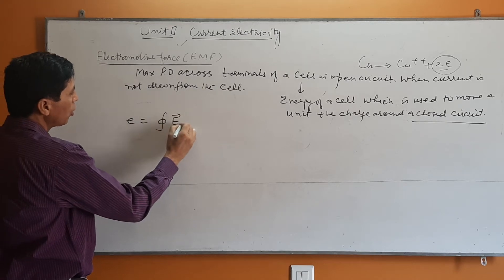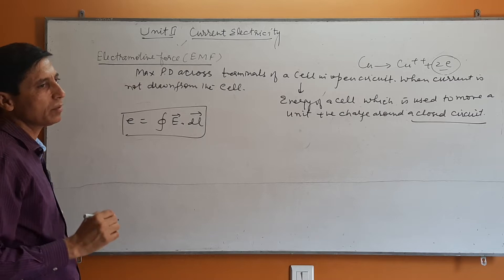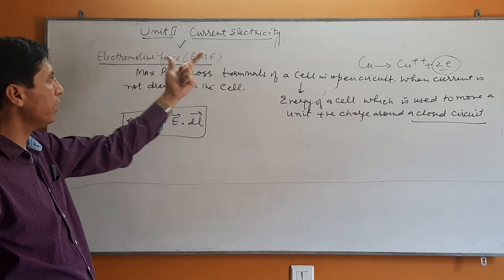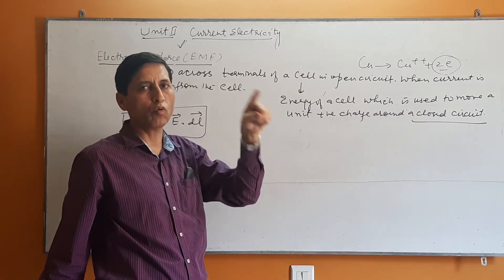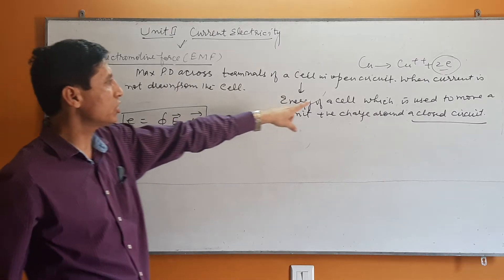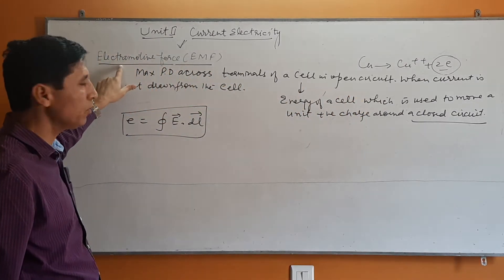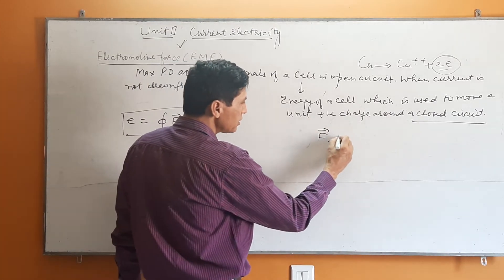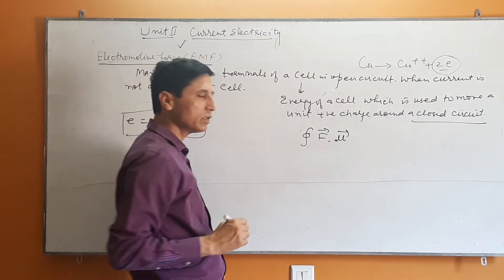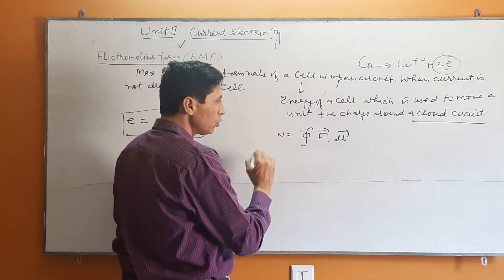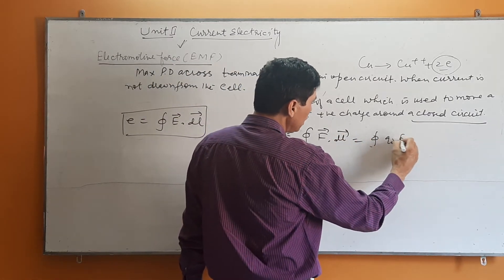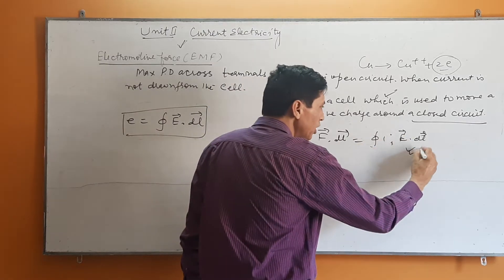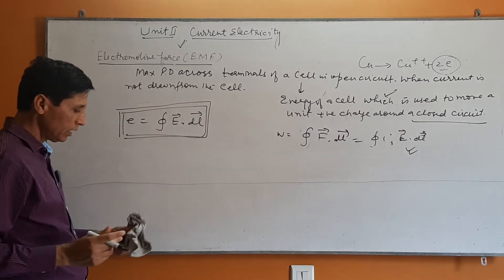The formula for EMF is given by E equals the integral of E dot dL. Basically, EMF is not actually a force — it plays the role of work or energy. If F is the force and dL is the distance, then work done is F dot dL, and if this work is around a closed path you integrate it. Converting to the electric field case: work W equals q₀ times E dot dL, and for a unit positive charge q₀ equals 1, so it becomes the integral of E dot dL. This is the formula of electromotive force.